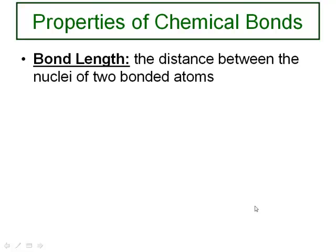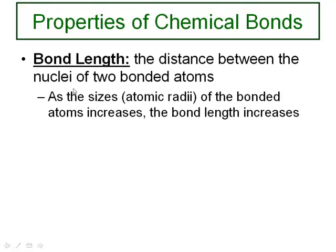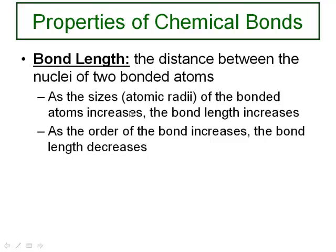Bond length depends on bond order. It's defined as the distance between the nuclei of two bonded atoms. Generally speaking, as the atomic radii of the atoms in the bond increase, the bond length also increases. Also, as the bond order increases, the bond length decreases. A triple bond is shorter than a double bond, which is shorter than a single bond. The more pairs of electrons shared between two nuclei, the stronger the attraction, and the closer the nuclei are pulled together.